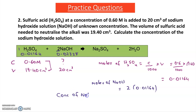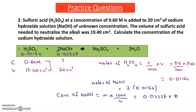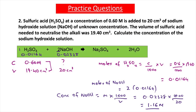Now I can calculate the concentration of NaOH. Concentration = moles × 1000 ÷ volume = 0.02328 × 1000 ÷ 20, where 20 cm³ is the volume of NaOH. Putting this into the calculator gives a concentration of NaOH = 1.16 mol dm⁻³.